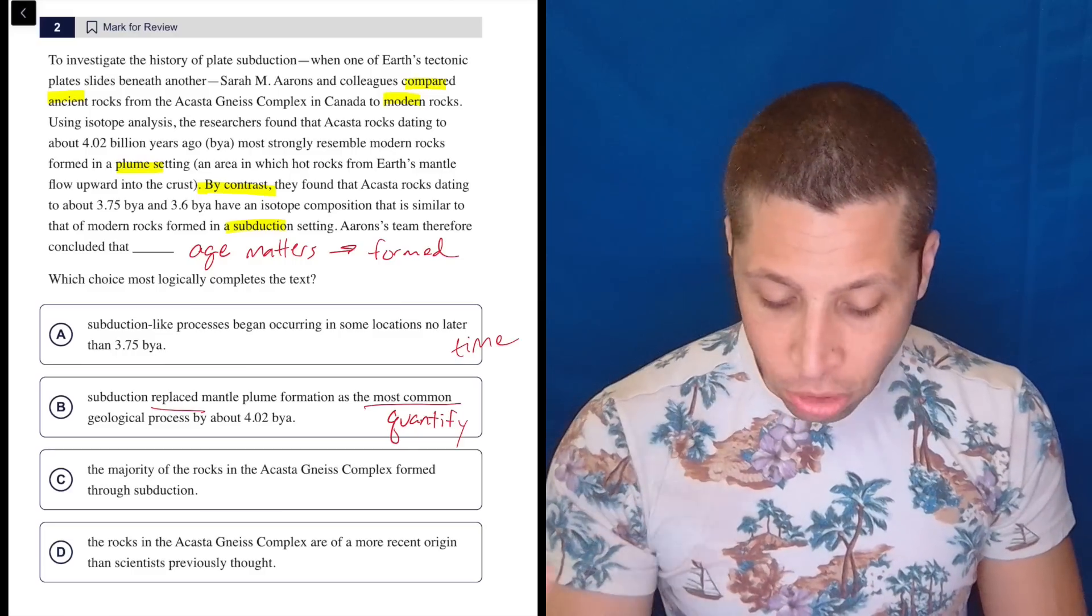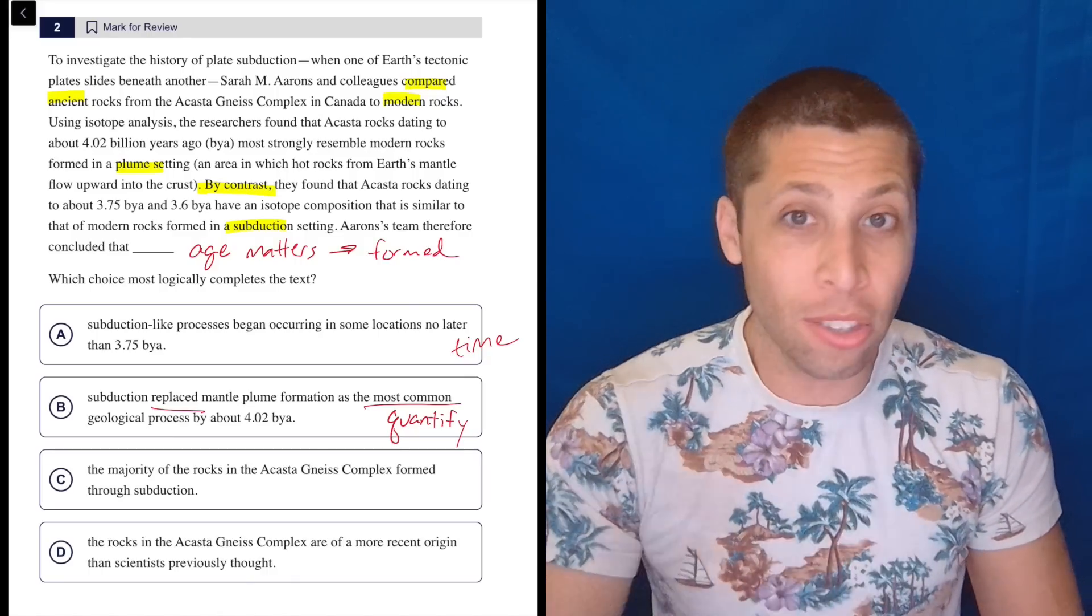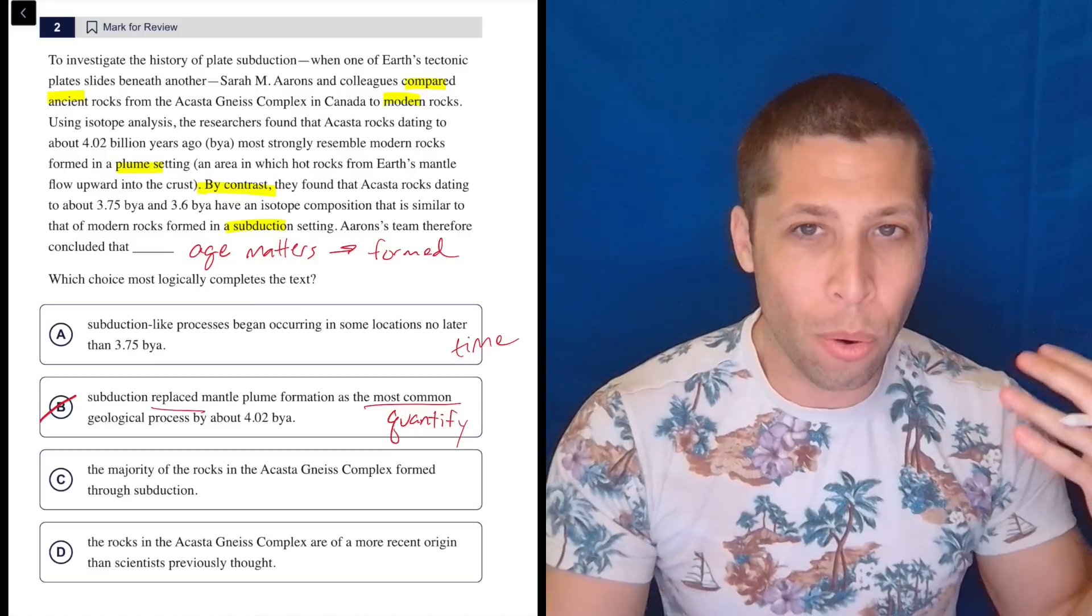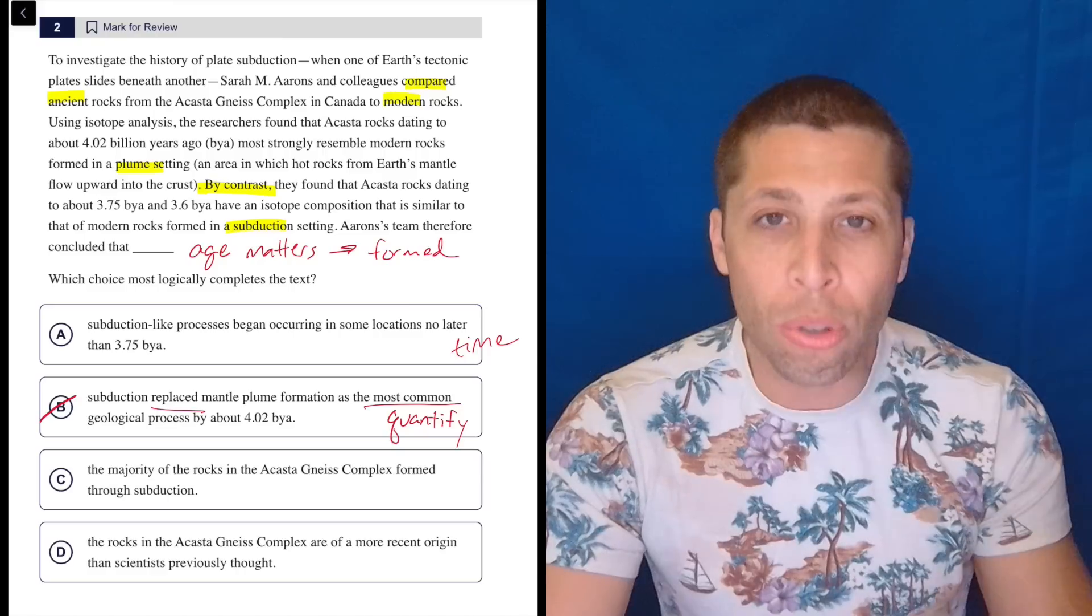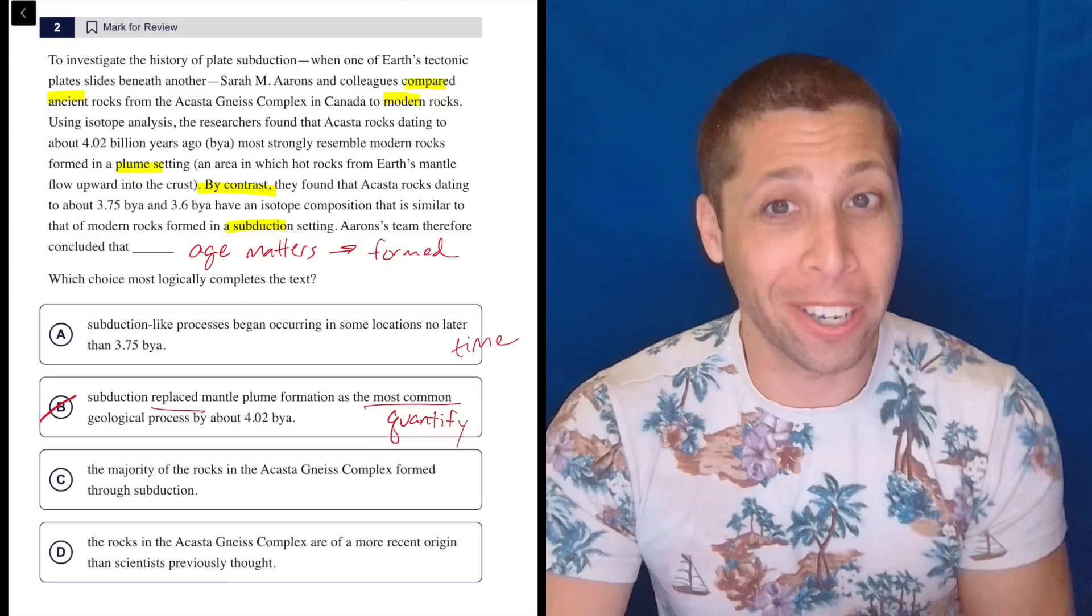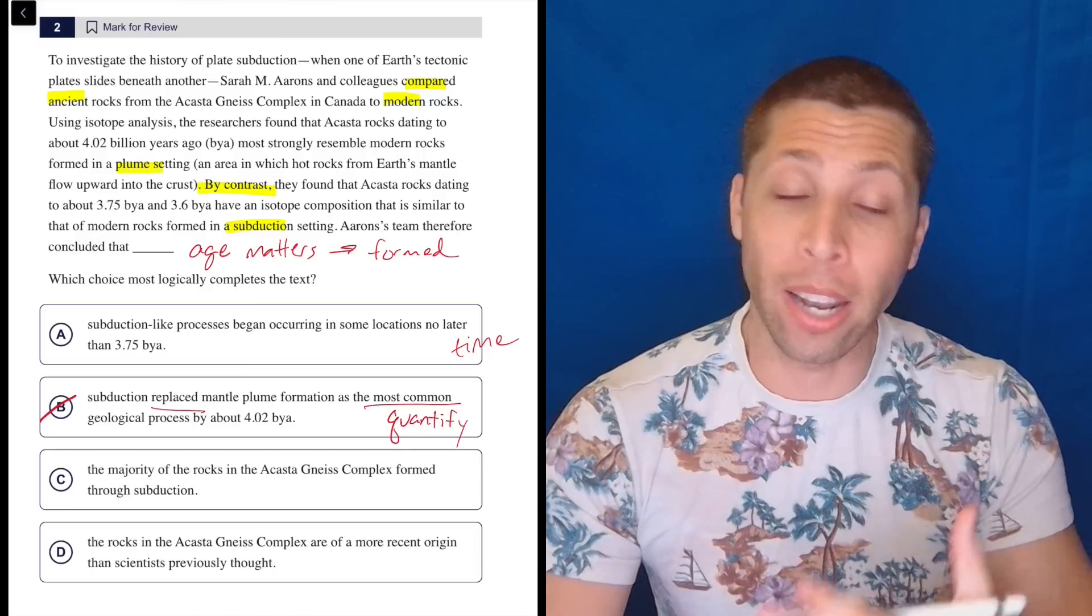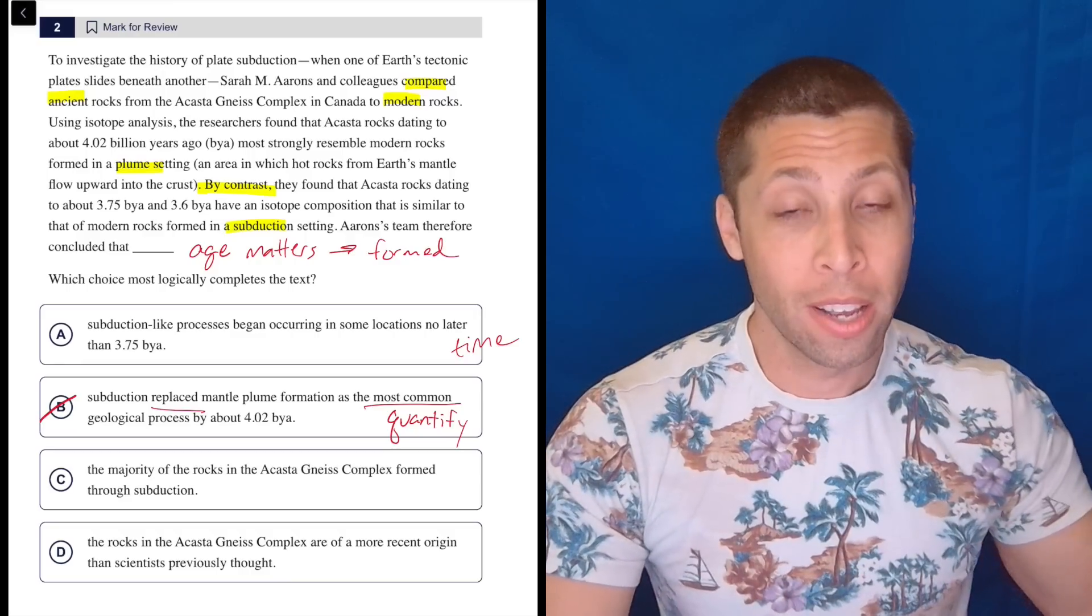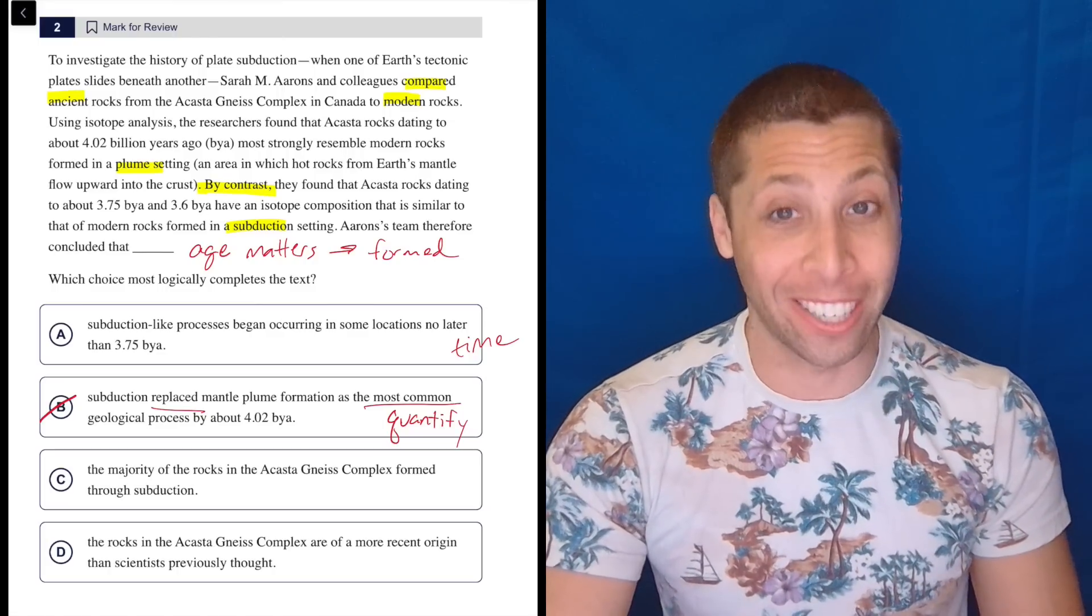Plus, this isn't even focused on just this area, right? This particular spot in Canada. This is just saying it's the most common geological process. This is way too strong. And if it's replacing it, then the other one is gone. We don't know that. We just are looking at this one spot and looking at the two different types of rocks they found there. This is a huge conclusion to draw. If you are reading that and you don't have that same feeling that I'm trying to convey right now, that there's a lot of problems with this choice, it is going way too far, you are going to miss out on a lot of trap answers. This is obvious to me that choice B is way too strong.